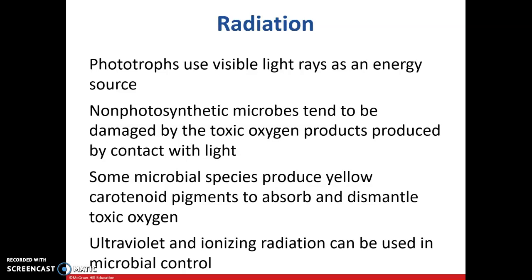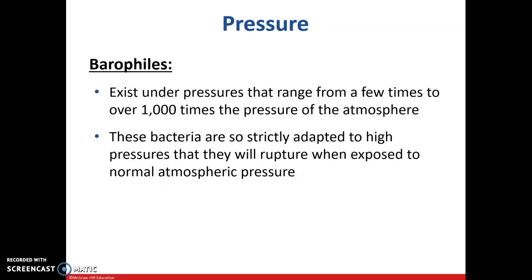Regarding radiation: phototrophs use visible light rays as an energy source. Non-photosynthetic microbes tend to be damaged by toxic oxygen products produced by contact with light. Some microbial species produce yellow carotenoid pigments to absorb and dismantle that toxic oxygen. Sometimes UV light is used in microbial control — you've probably seen that in the lab when handling those goggles. We'll pick up with Part 3 of Chapter 6.